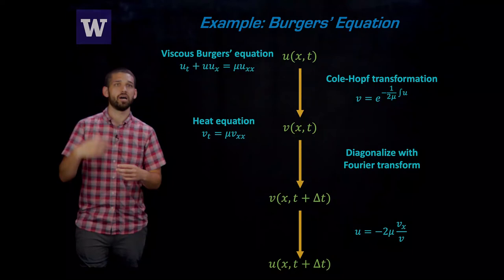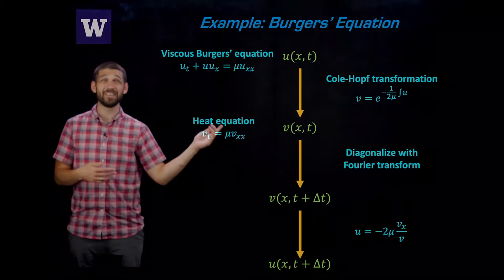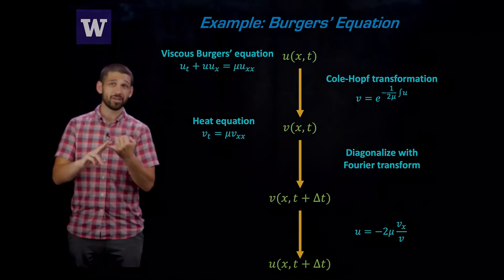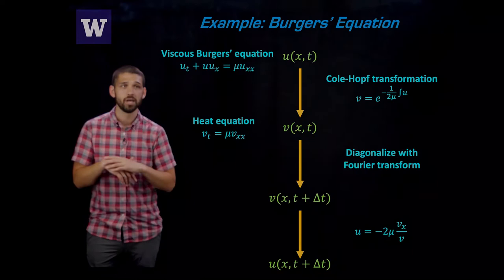We're going to start with the example of Burgers equation. If you take viscous Burgers equation, and U is a solution of the viscous Burgers equation, we can apply the Cole-Hopf transformation to get V. And V then will satisfy the heat equation, which is great news because we know all about the heat equation. In particular, we can write down exact solutions to it. We know exactly what the eigenvalues and eigenfunctions are.